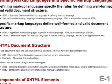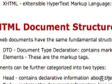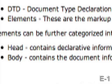All XHTML documents share a fundamental structure. First, it has the DTD, or the Document Type Declaration. Next, it has the elements of the page. These form the structure of the page and the elements that you see on it, such as the links, the images, and the text. The elements can then be further categorized into two parts: first is the head elements, and next is the body.